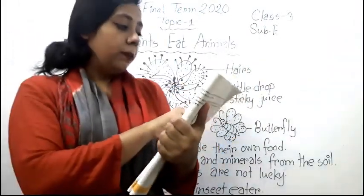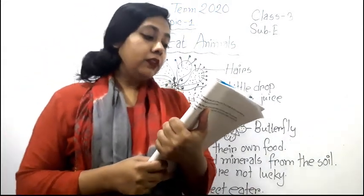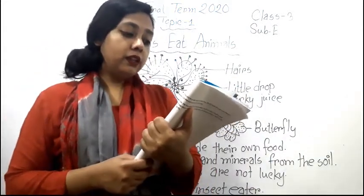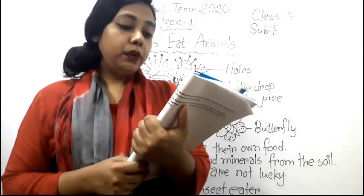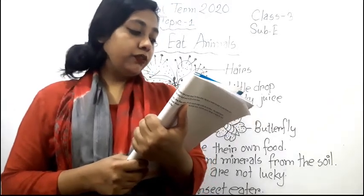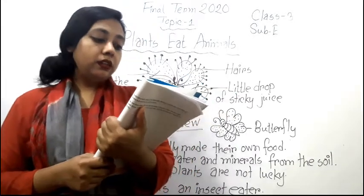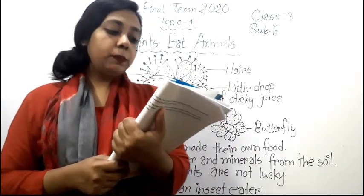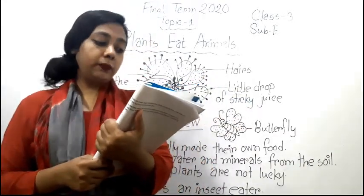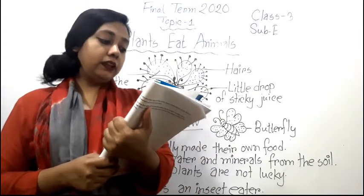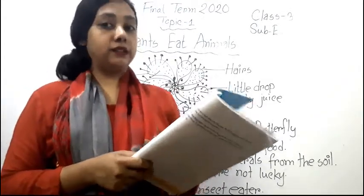Many animals eat plants — cows eat grass and goats eat leaves. But there are a few plants that eat animals. They do not eat big animals like cows and goats; they can eat only flies and insects.